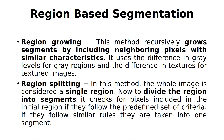Region-growing means neighboring pixels with similar characters grow in segments by including neighboring pixels with similar characters. The pixels are combined continuously if the character is similar, and then it will form one segmentation. This is called region-growing.